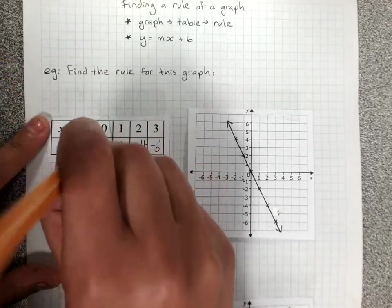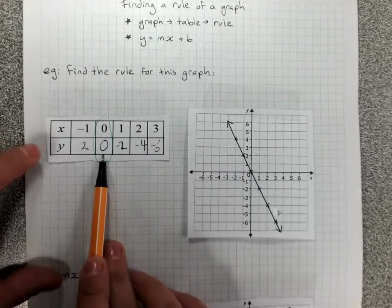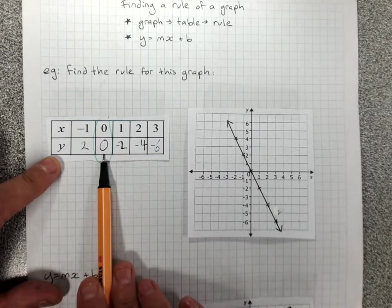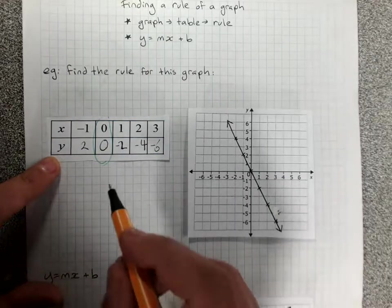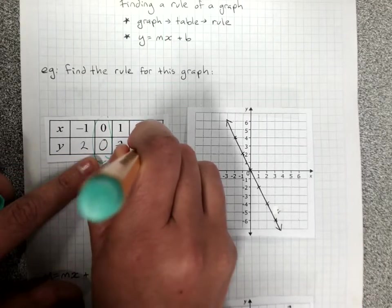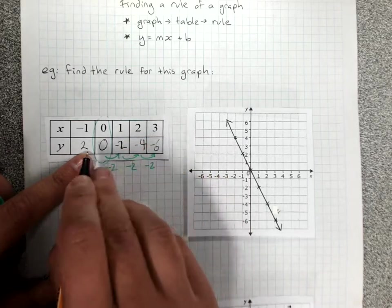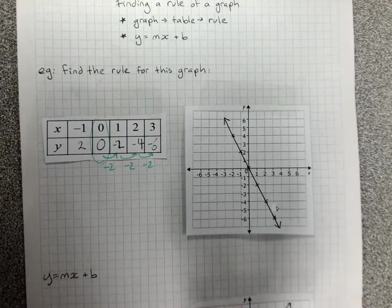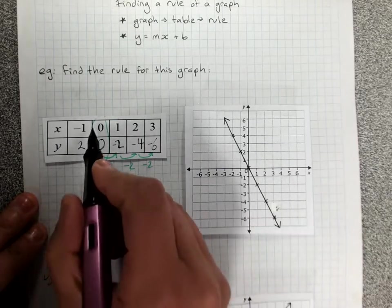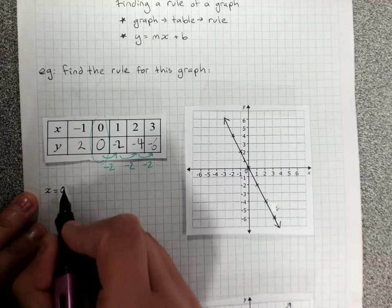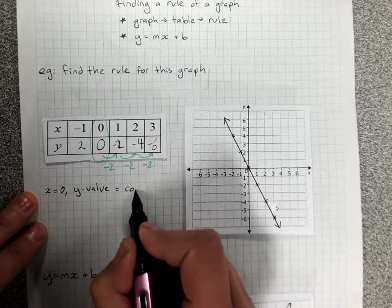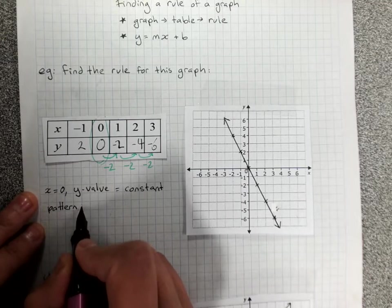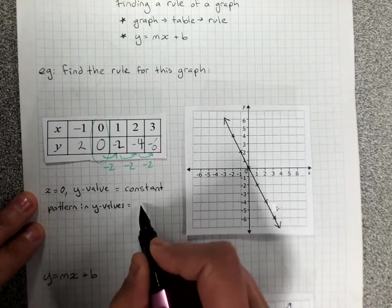When x is 0, the number or the value of y will be the number that's on its own in the rule. So this is actually saying this rule has no number on its own, it's just got 0. And we've also noticed that the pattern in the y values, this is going down by 2 every time x goes up by 1, is the coefficient of x.